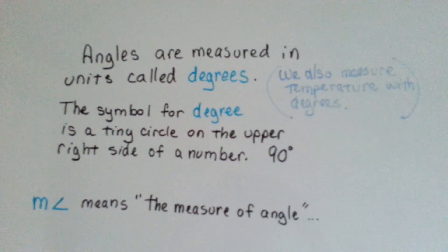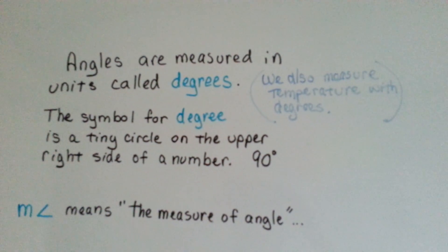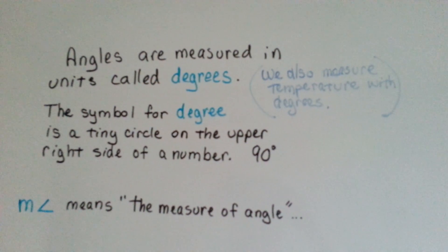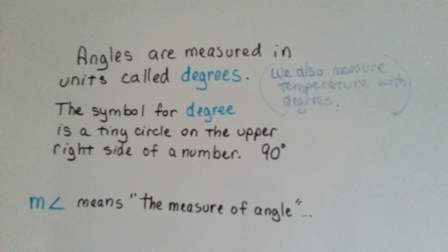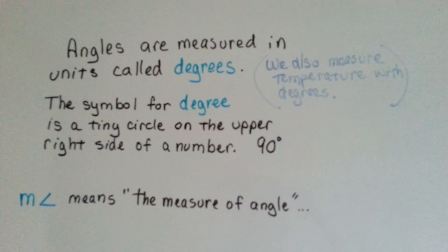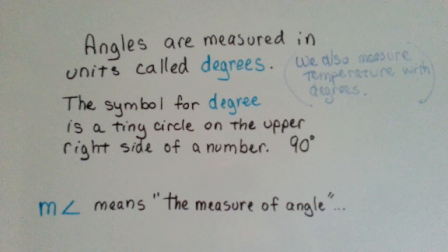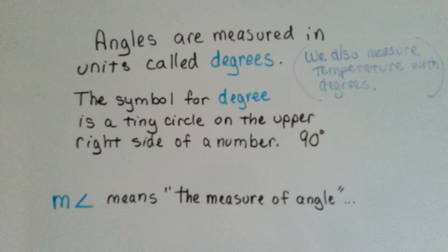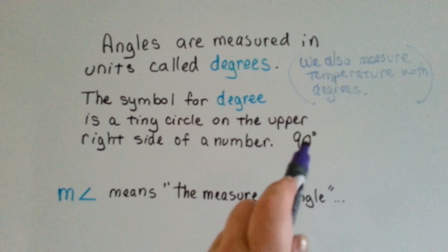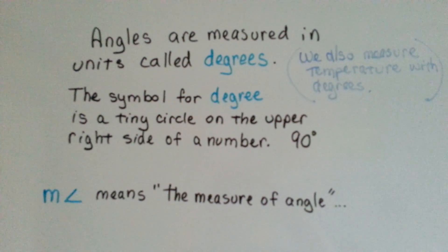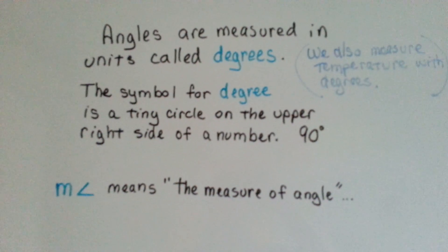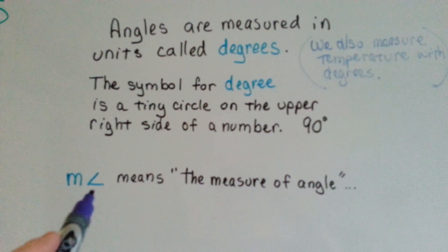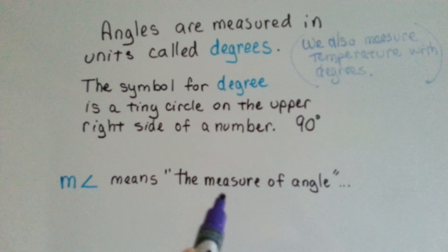Angles are measured in units called degrees, which we also measure the temperature outside with a thermometer. The symbol for degree is a tiny circle on the upper right side of a number like this, 90°. If you see an m∠, that means the measure of the angle.